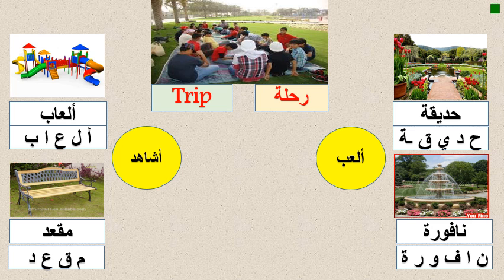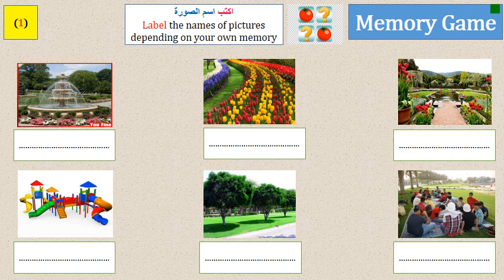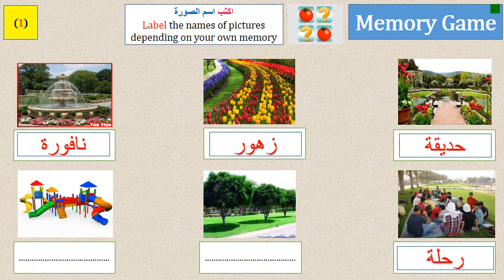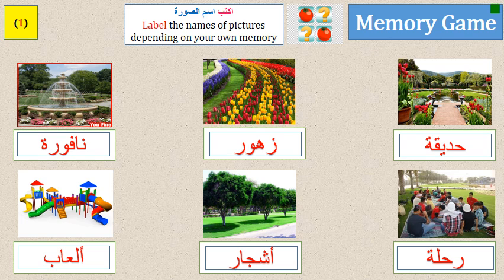So ألعب and أشاهد. Let's remember the pictures: زهور means 'flowers,' نافورة is the fountain, رحلة is the trip, أشجار means 'trees,' and الألعاب is the playing area or games area.